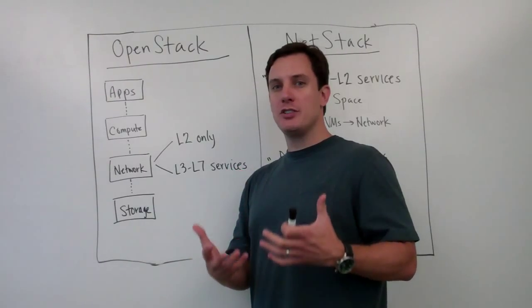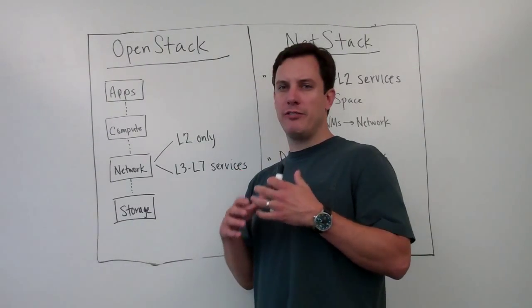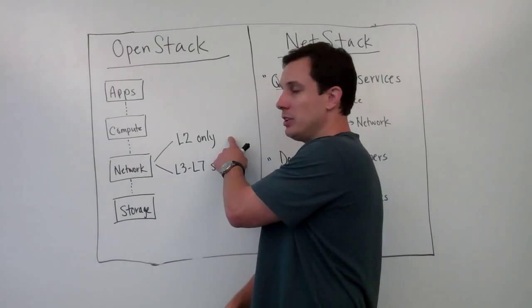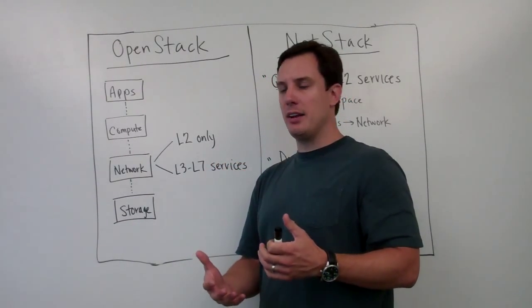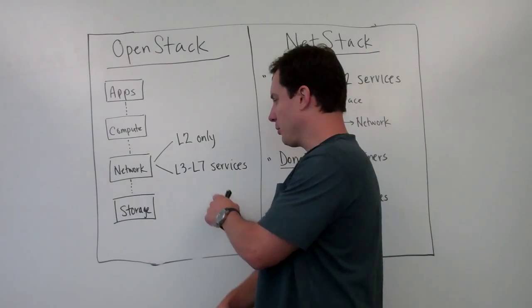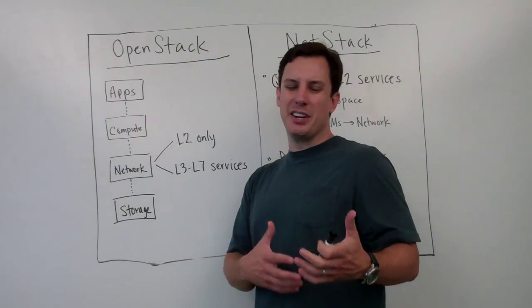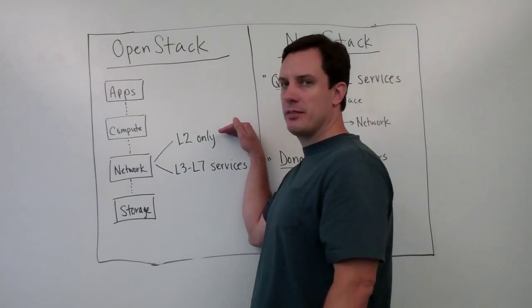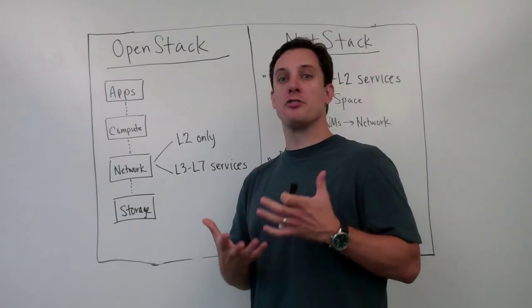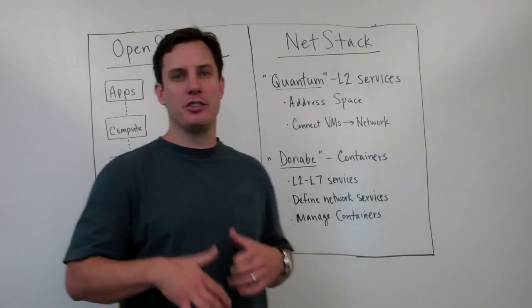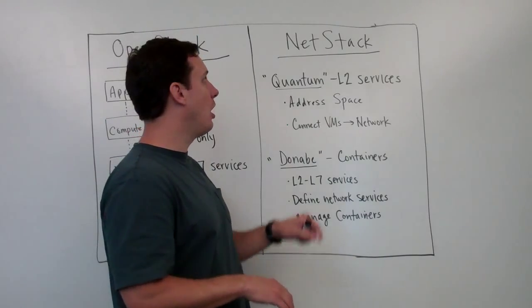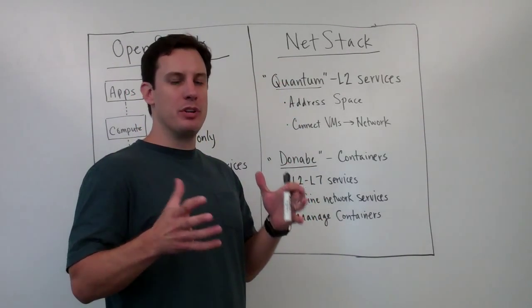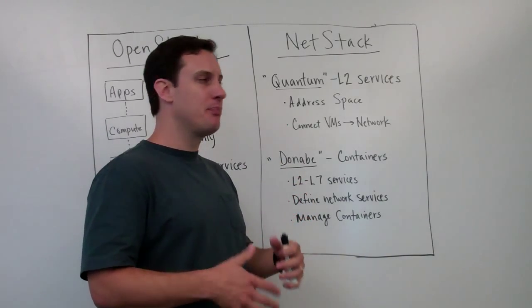In today's OpenStack environment, the community is really focused on two types of areas. One is layer-two-only services, and also layer-three through layer-seven — or really layer-two to layer-seven services. So a simplified set of services and a more robust set of services. These are called NetStack, or NetworkStack — so when you hear the term NetStack, this is what they're talking about.